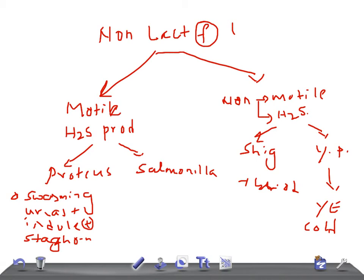To summarize: non-lactose fermenters are divided into motile and H2S producers — Proteus and Salmonella — and non-motile and non-H2S producers — Shigella, Yersinia pestis, and Yersinia enterocolitica. Note that within the Salmonella group, Salmonella typhi does not actually produce H2S, even though it belongs to the motile and H2S producing group. Thank you for watching. Take care.